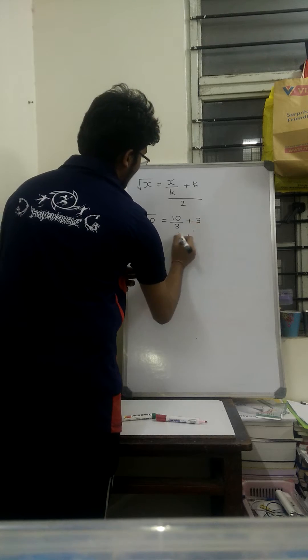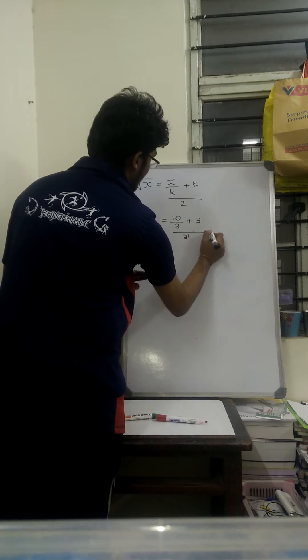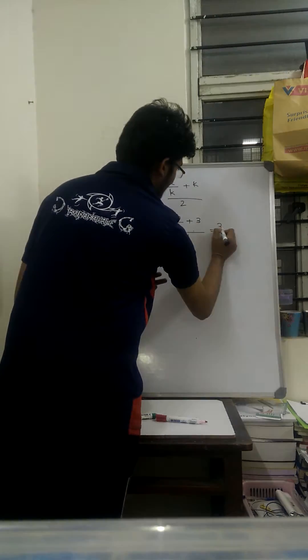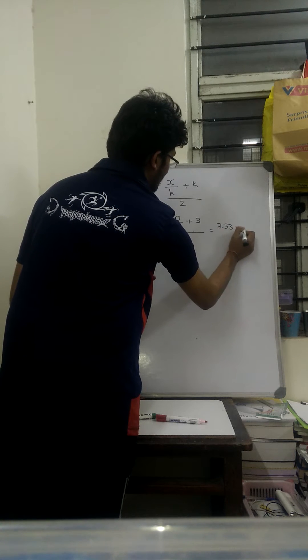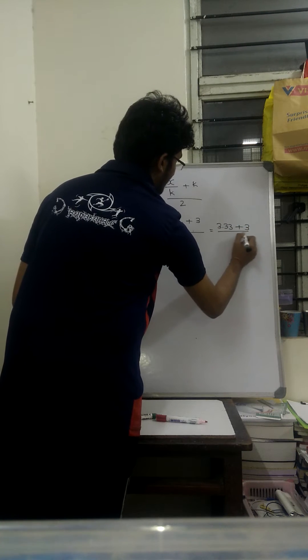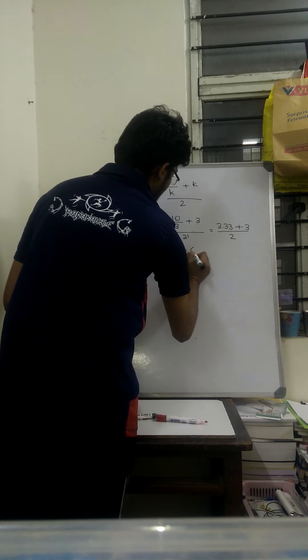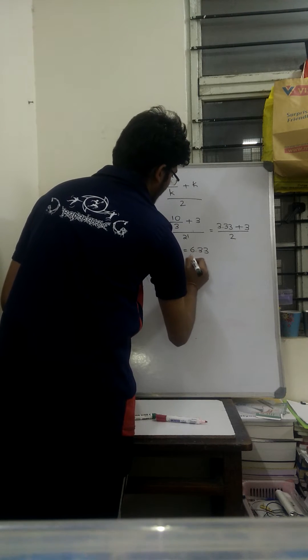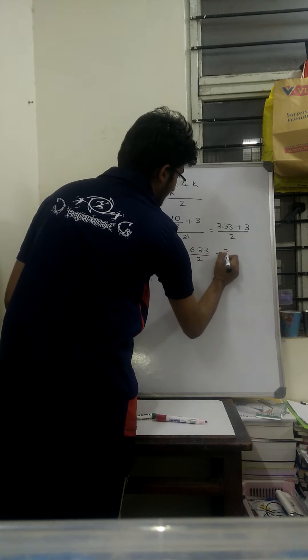I add it with the same number and divide the whole thing by 2. 10 by 3 is 3.33 plus 3 whole divided by 2. I get 6.33 divided by 2 which is equal to 3.165.